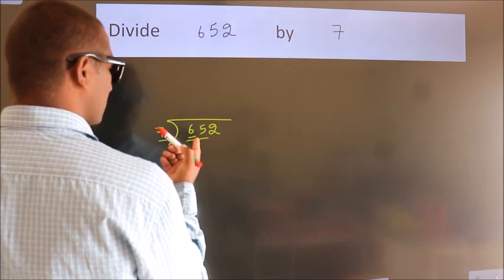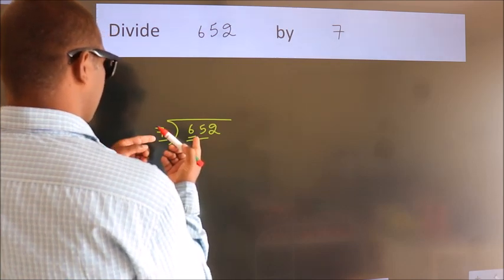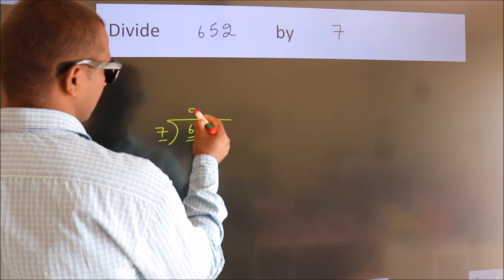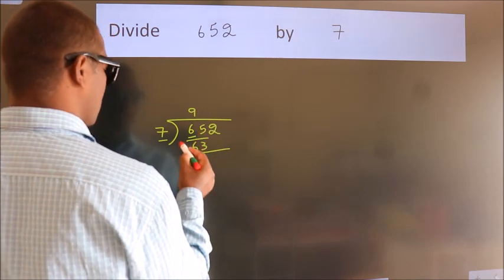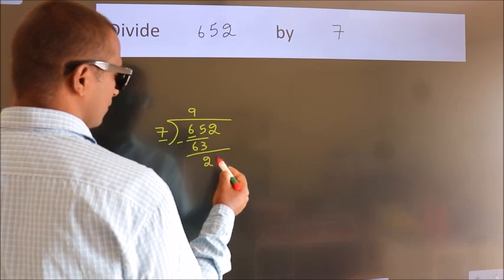A number close to 65 in the 7 table is 7 nines, 63. Now we should subtract. We get 2.